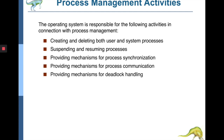The operating system's process management activities include creating and deleting both user and system processes, suspending and resuming processes, providing mechanisms for process synchronization — for example, when one process is dependent on another — providing mechanisms for process communication, and handling deadlock situations where processes holding shared resources block each other. We will discuss deadlock mechanism in detail as it is a very important concept.